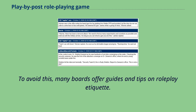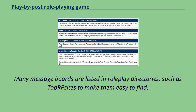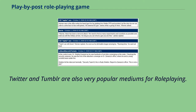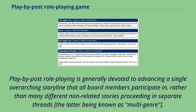To avoid this, many boards offer guides and tips on roleplay etiquette. Many message boards are listed in roleplay directories, such as top websites, to make them easy to find. Twitter and Tumblr are also very popular mediums for role-playing. Play-by-post role-playing is generally devoted to advancing a single overarching storyline that all board members participate in, rather than many different non-related stories proceeding in separate threads, the latter being known as multi-genre.